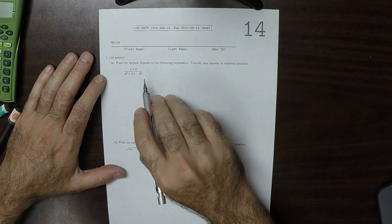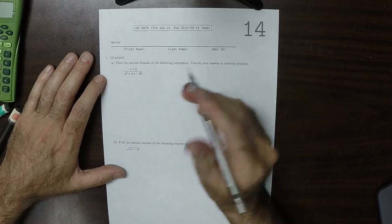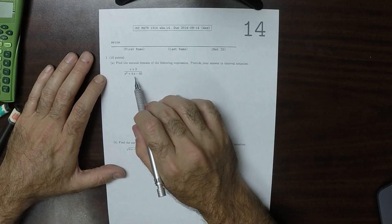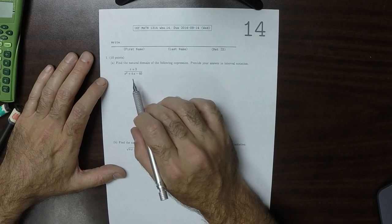So natural domain is the set of all inputs for which the expression is defined. So this is a quotient, and the only thing that could go wrong with it is a division by zero.